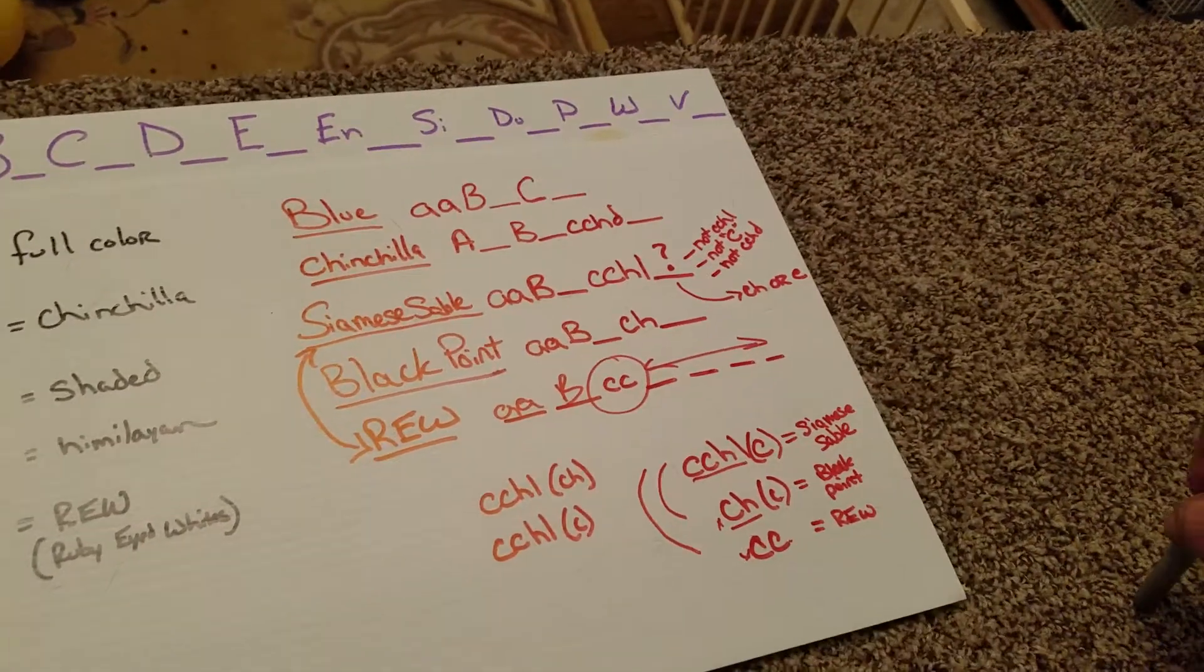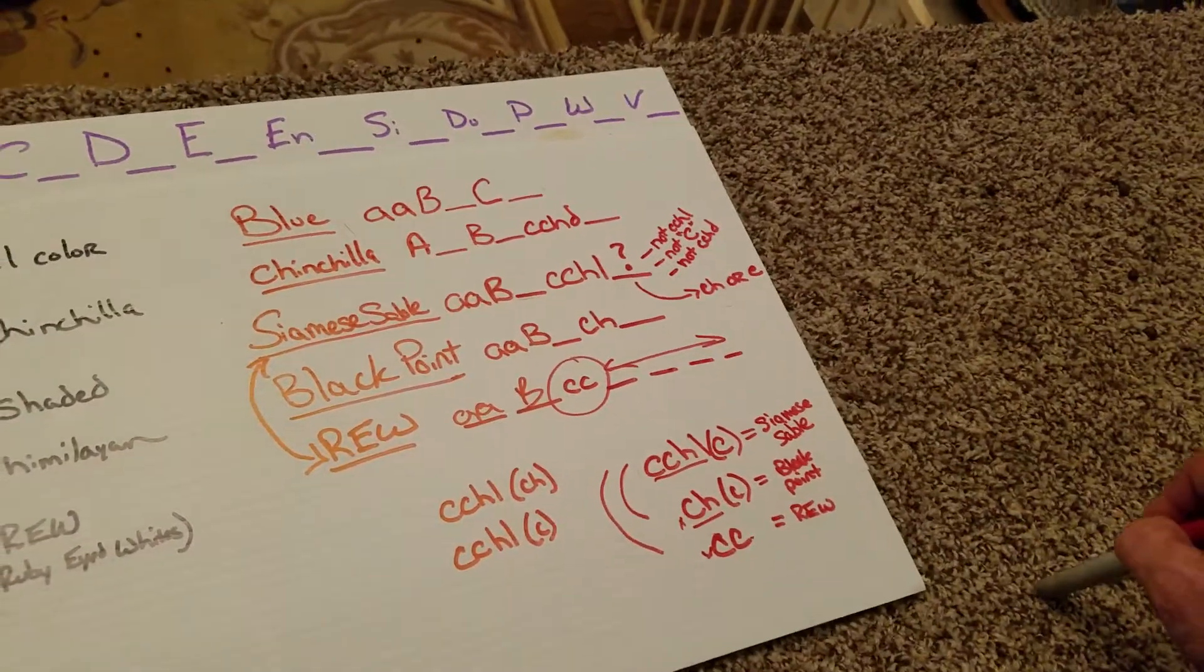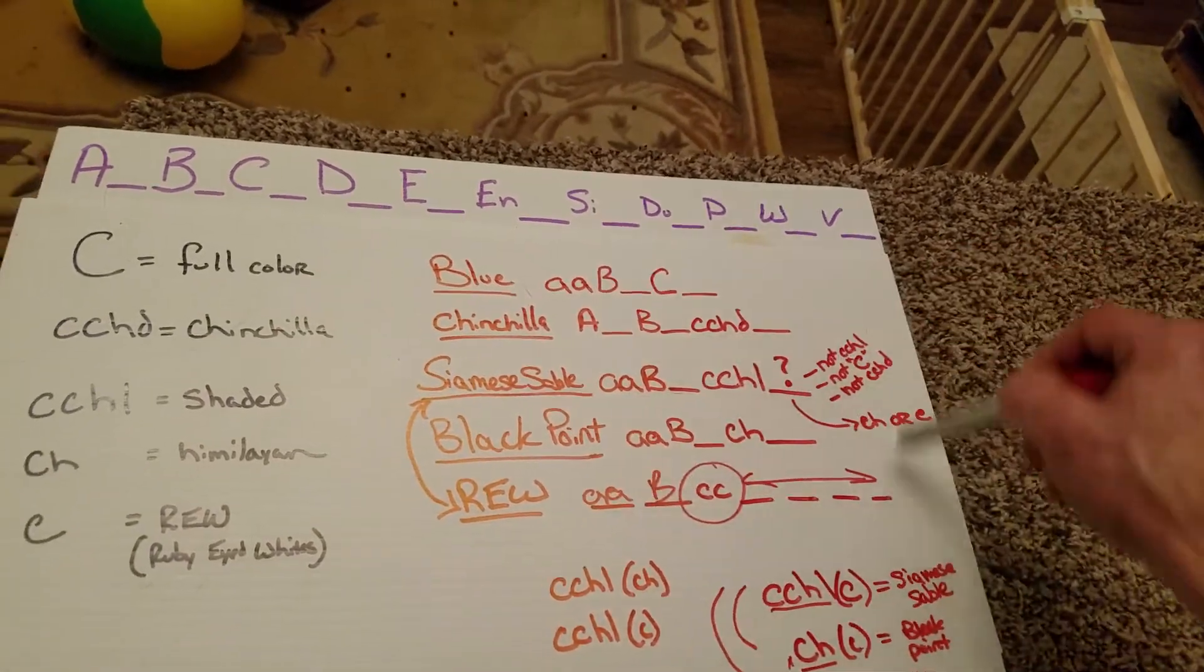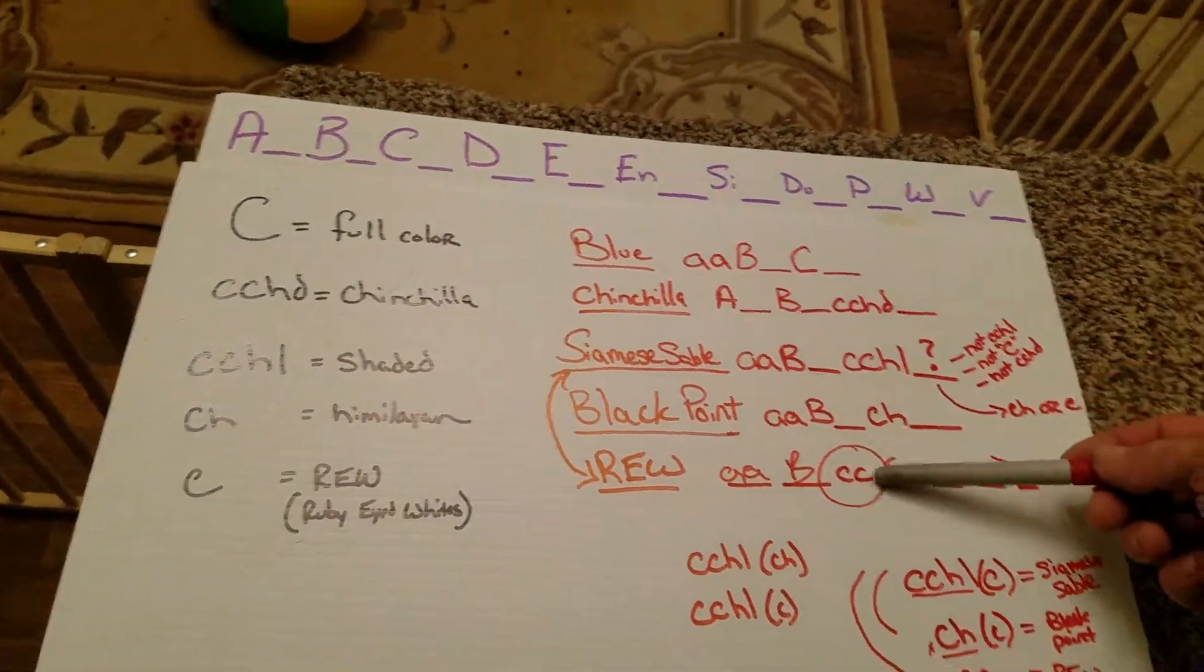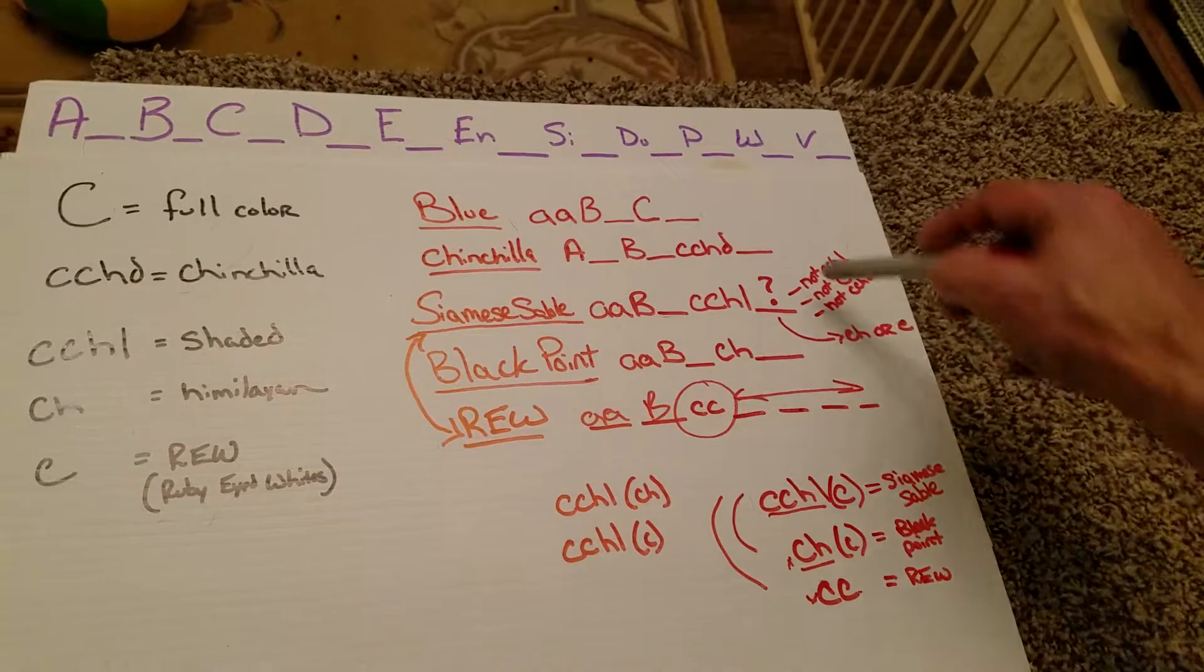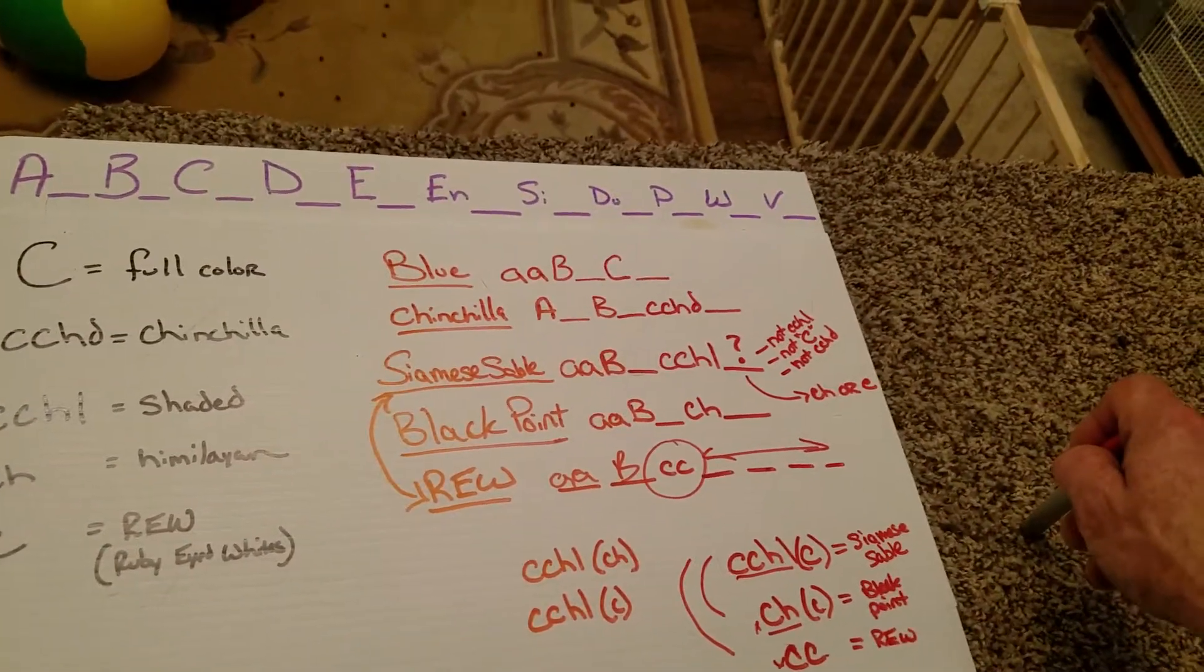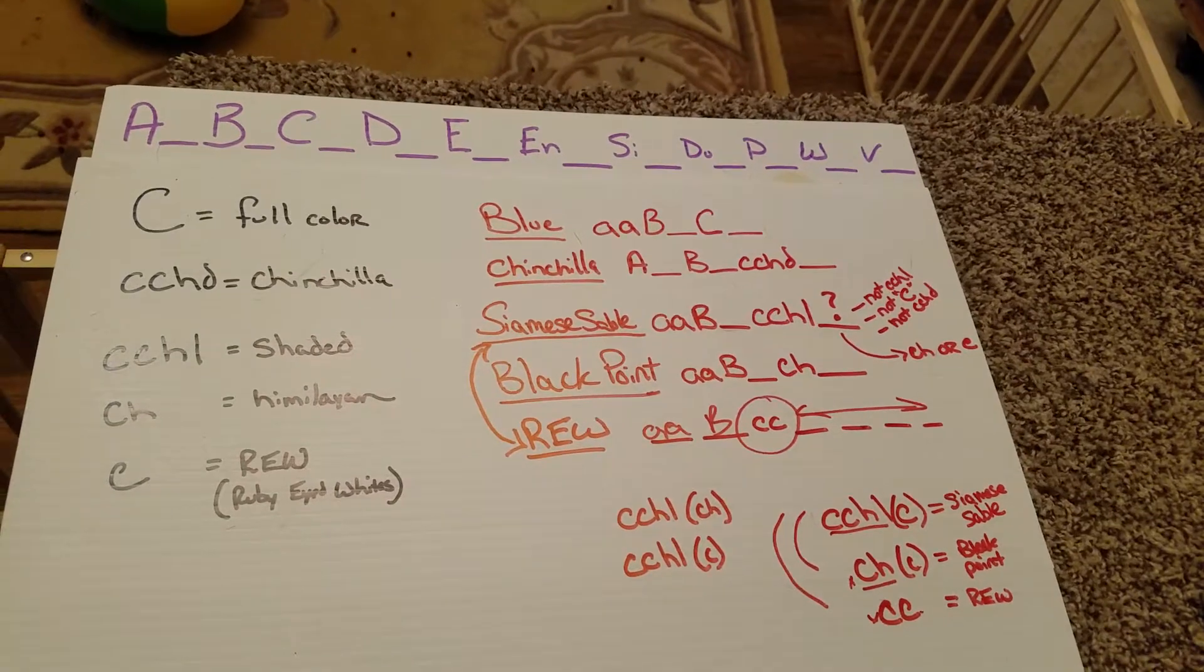Again, this is based upon our ruby-eyed white being self and black. There's so many options here, but we're not going to get into too much of that right now. We're just talking about order of dominance and how to recognize that color, but I just kind of wanted to give you a little bit of insight on how you can use a ruby-eyed white to find out what's hiding as the recessive allele behind your most dominant, because the recessives you're not going to be able to see. The dominant ones you'll be able to see and are actually what's visually presented in your rabbit's color.